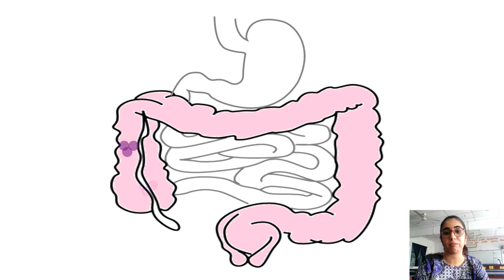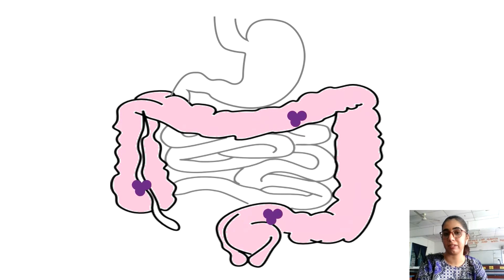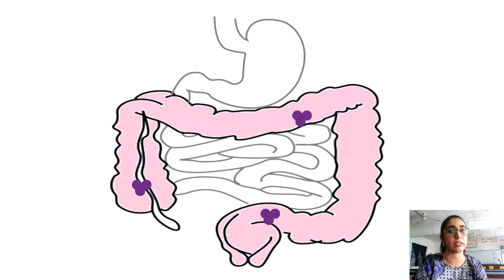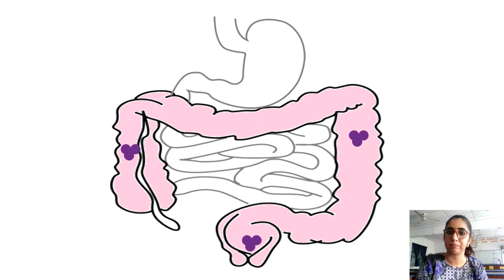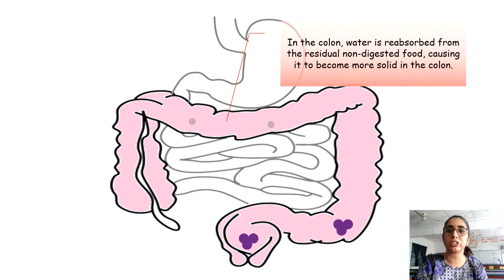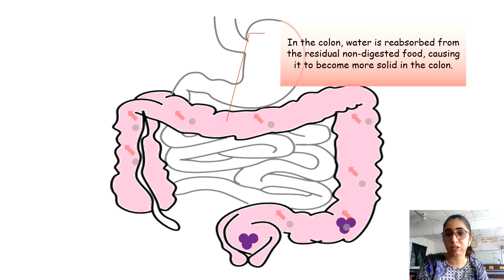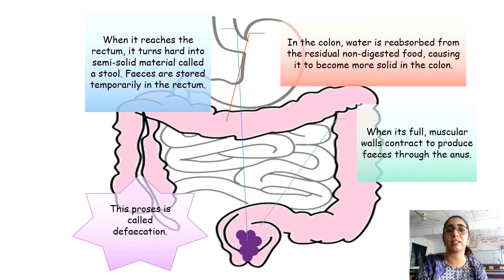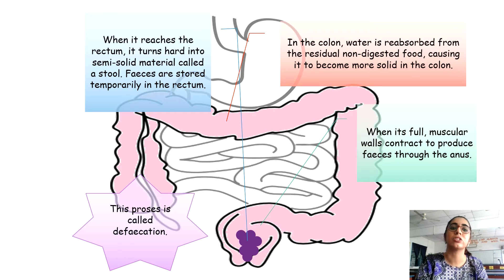The movement of feces will take about 12 to 24 hours before entering the rectum. The rectum will also absorb water from the feces, making it semi-solid. The rectum stores feces temporarily. The accumulation of feces in the rectum increases pressure, causing the urge to expel the feces from the body. Defecation is the process of expelling the feces from the large intestine through the anus.